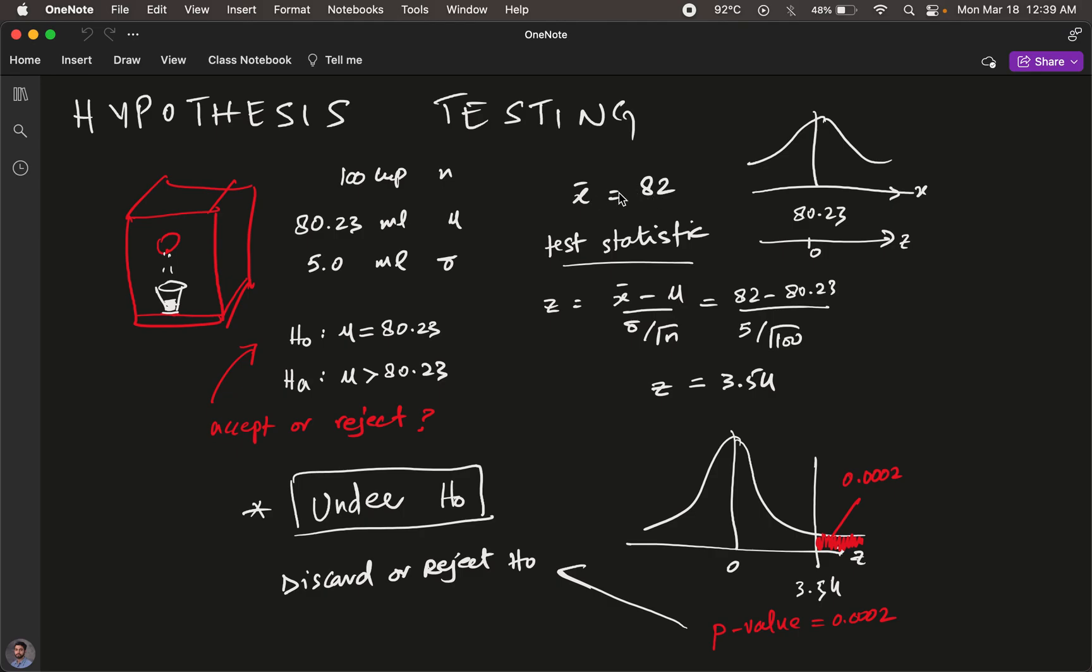Should we be worried? Is 82 significant? We had a test statistic computed for this particular value—turned out to be a z value of 3.54, which translated to a p-value on a normal distribution of 0.0002.